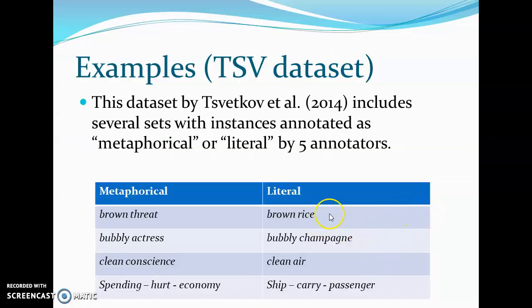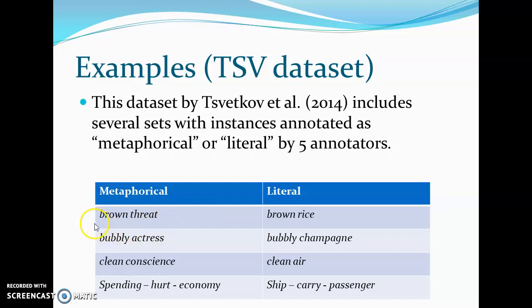The best way to understand metaphors is by looking at some examples. Brown rice is literal, brown thread is metaphorical. In the literal case, brown has its original physical meaning as the color brown. And in brown thread, it's no longer true. It's actually quite typical to see a difference in the concreteness of words in metaphorical expression. Brown is a very concrete word and thread is a very abstract word.